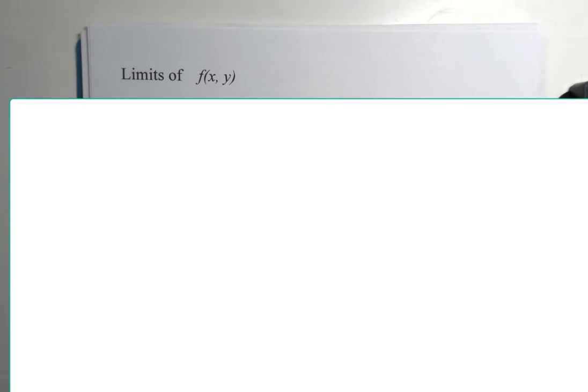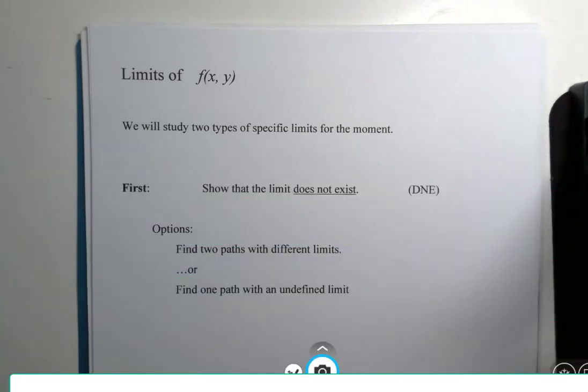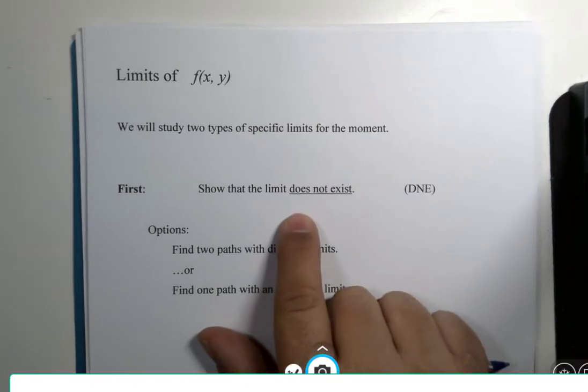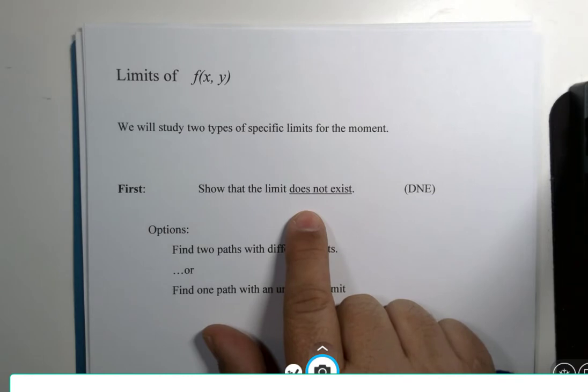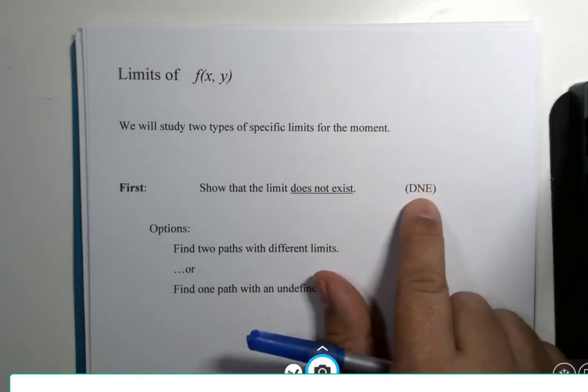We're going to be studying two types of problems. The first type of problem that we've already looked at is a particular limit where I'm going to tell you in advance that it doesn't exist and we're going to do a verification. We're going to demonstrate that it does not exist. DNE, does not exist.